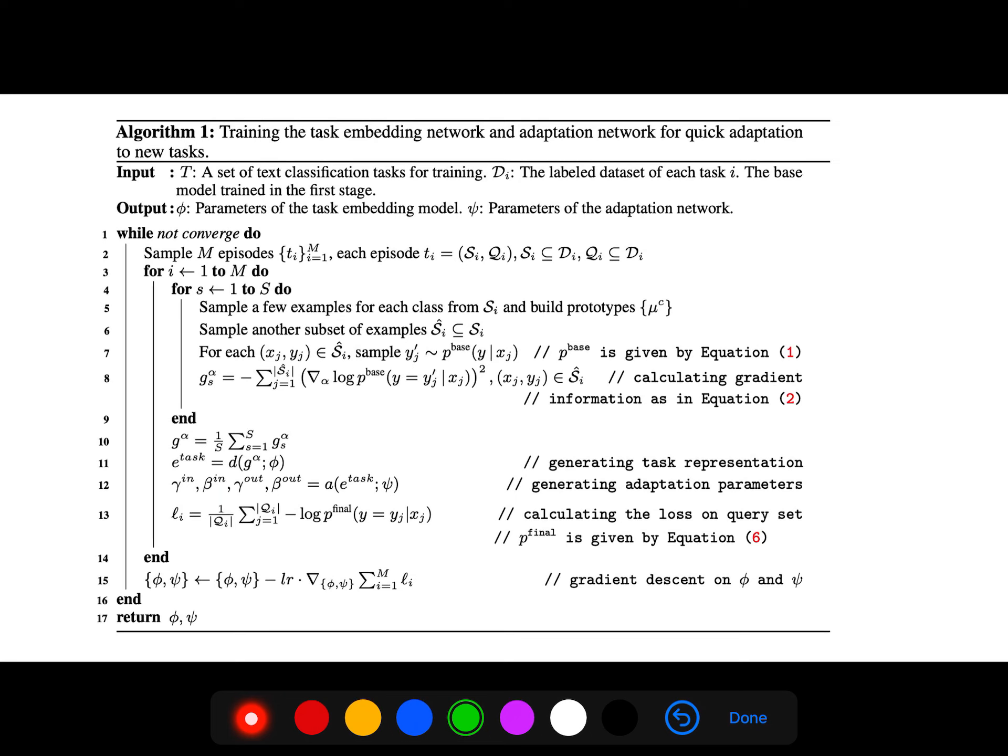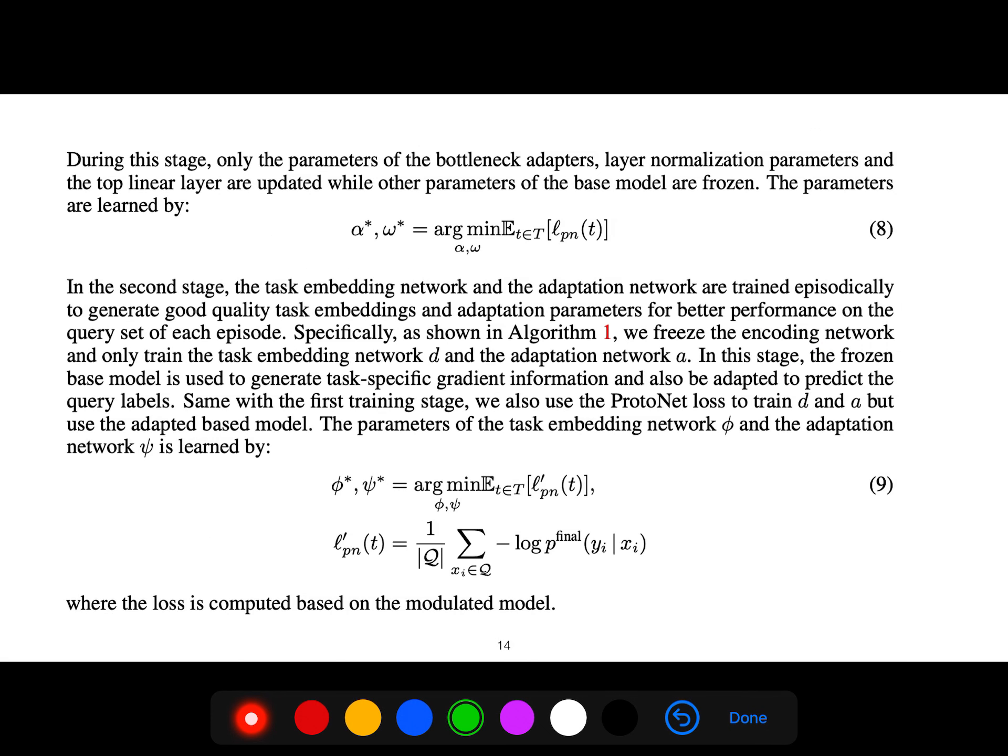Our input is a set of text classification tasks, and the output is the parameters of the task embedding model and the adaptation network. We get both phi and psi as output. During this stage, only the parameters of the bottleneck adapters, layer normalization parameters, and the top linear layer are updated while other parameters of the base model are frozen.